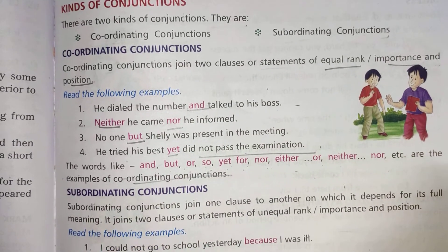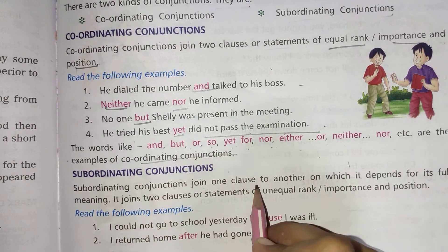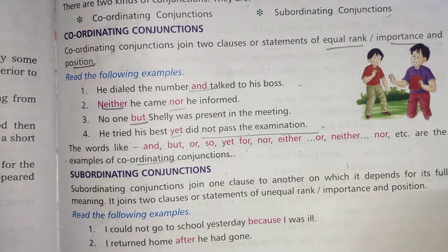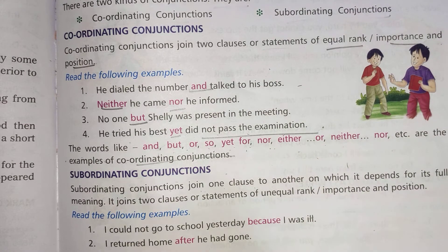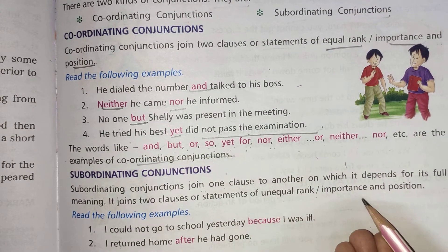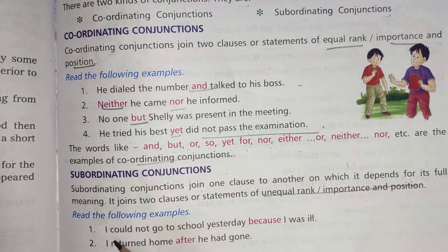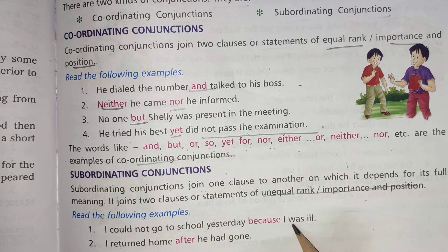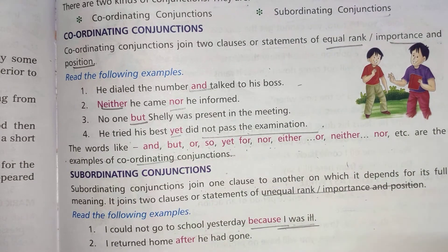Now let's talk about subordinating conjunction. A subordinating conjunction joins one clause to another on which it depends for its full meaning. It joins two clauses or statements of unequal rank, importance, or position. For example: 'I could not go to school yesterday because I was ill.' Here 'because' is the subordinating conjunction.